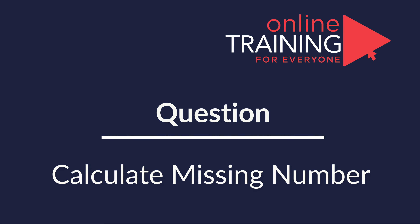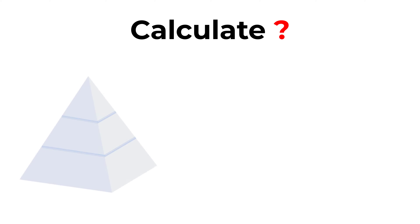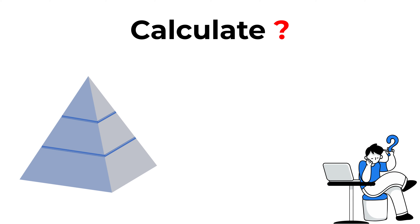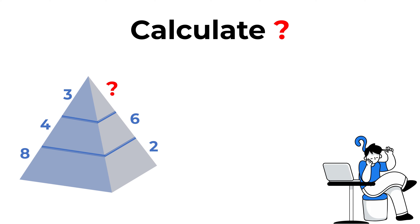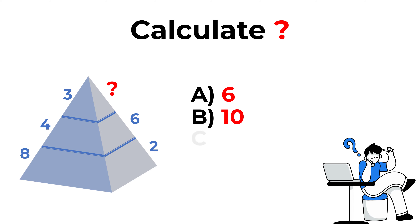Here's a cool question you frequently see on the test. You need to calculate the question mark. You're presented with a three-layer pyramid. On the bottom layer you have numbers 8 and 2, on the middle layer you have numbers 4 and 6, and in the top layer you have number 3. On the other side of the pyramid you have a question mark. The choices are: A is 6, B is 10, C is 7, and D is 2.